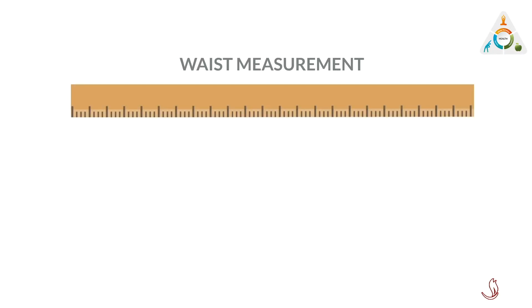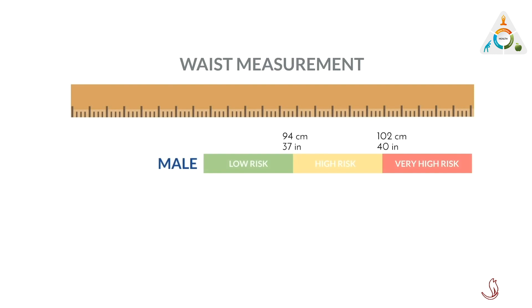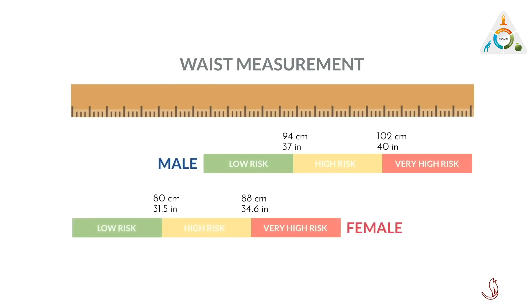You can now see what risk category you fall into depending on your waist measurement. As you can see, the numbers are different for males and females. Remember, this is not your trouser or clothing size, so please use the exact measurement to see where you fit in.